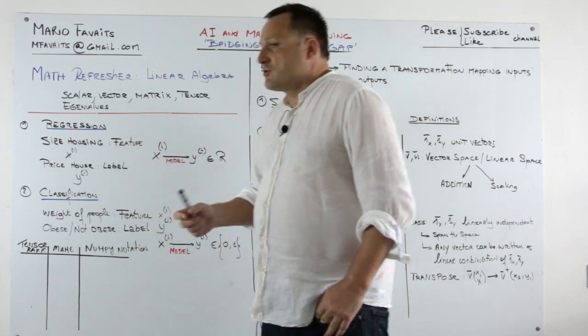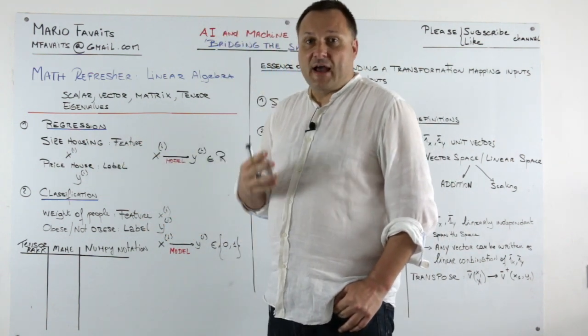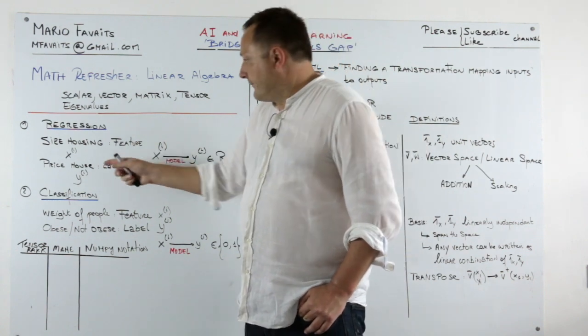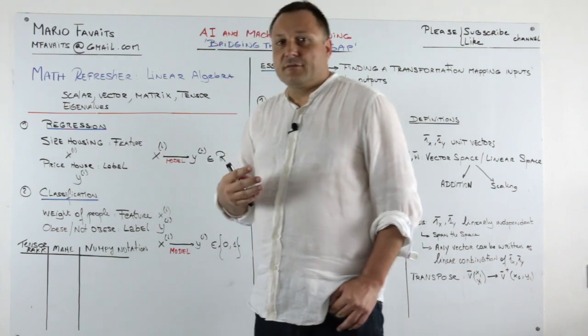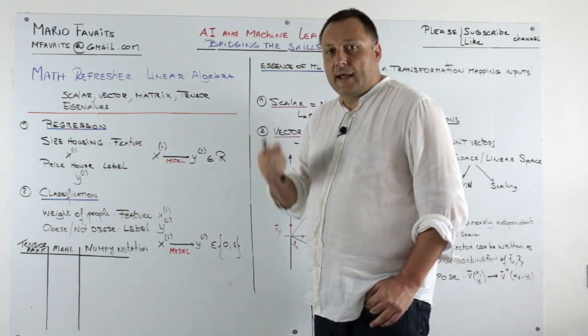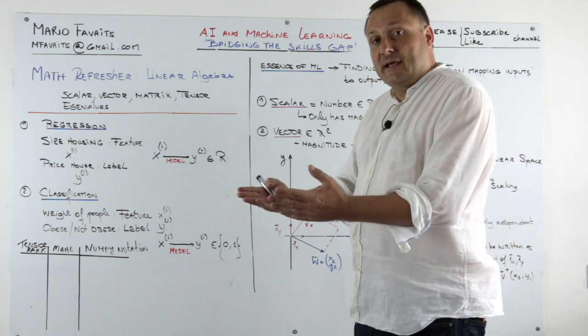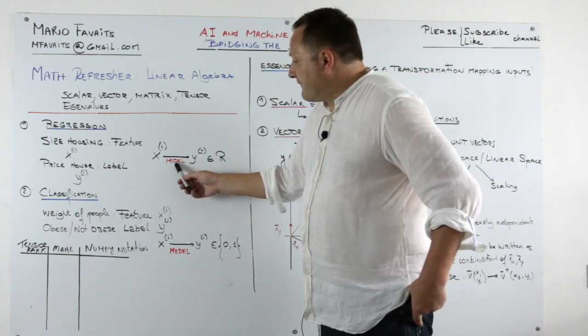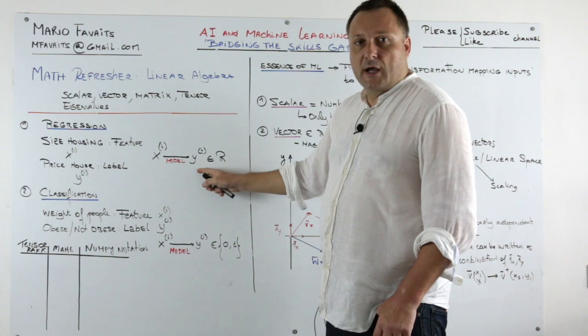In the regression problem we try to predict the price of the house given the size of the house. The size of the house we call the feature and that was the input XI. And the price of the house was called YI. And this we call the label. So the machine gets the inputs and the labels and then finds a model that maps the X's to the Y's.